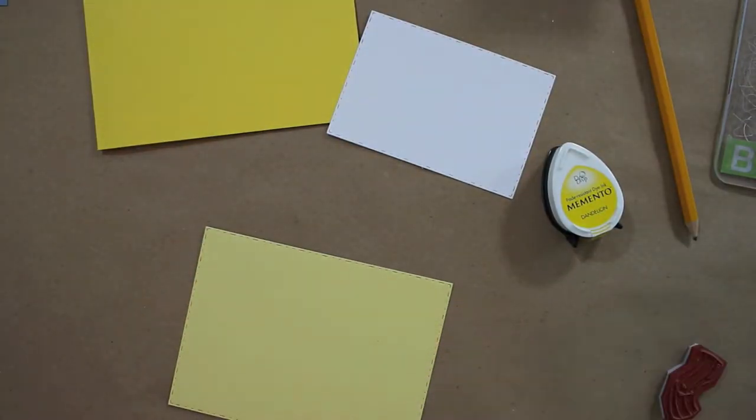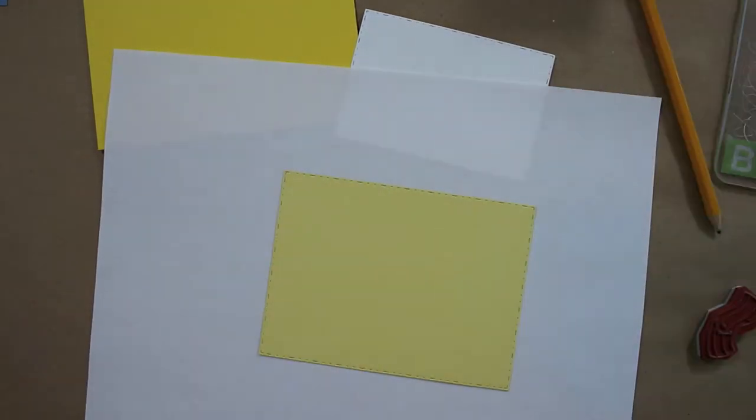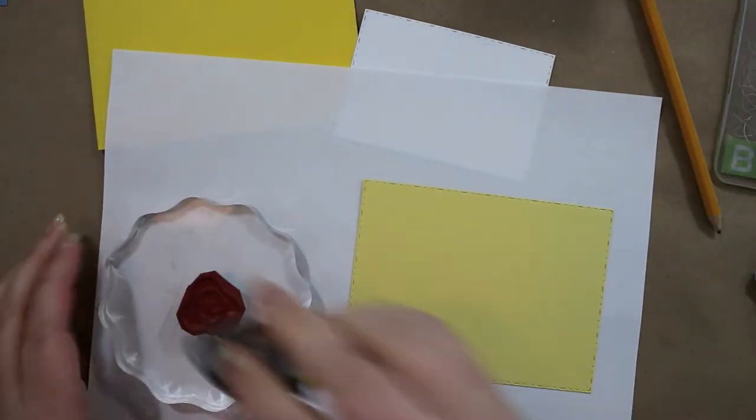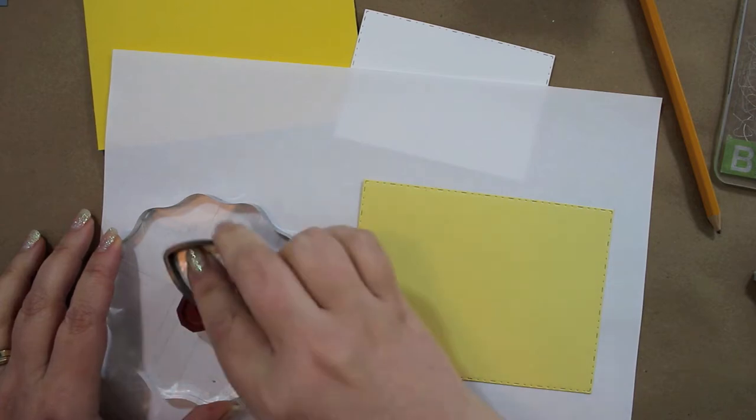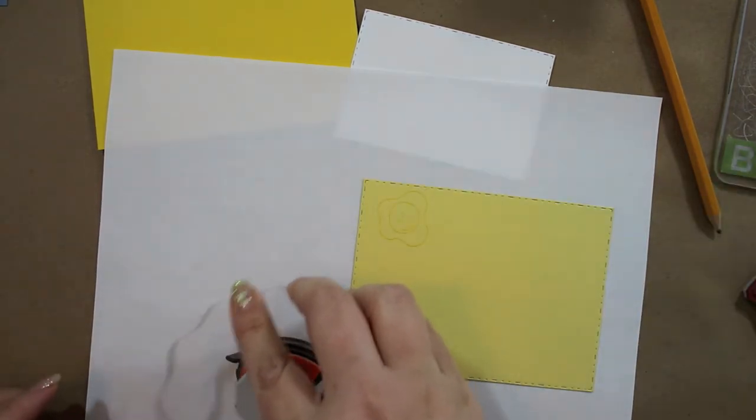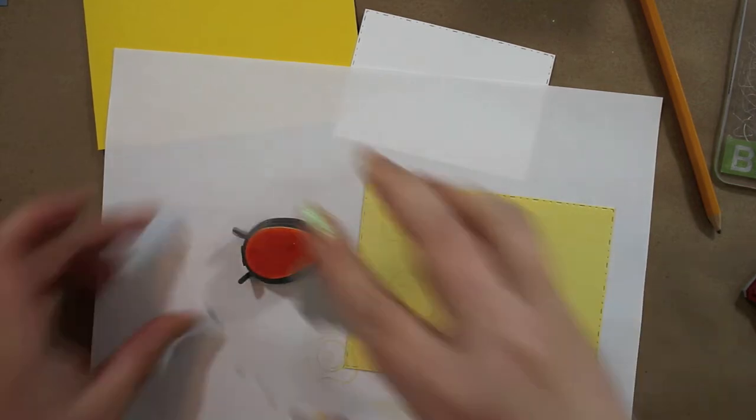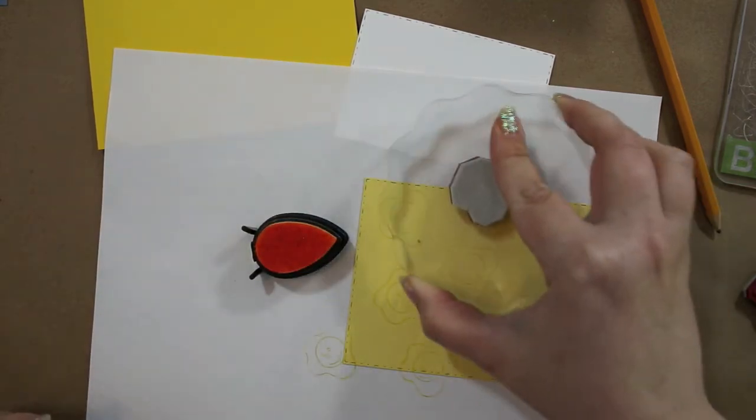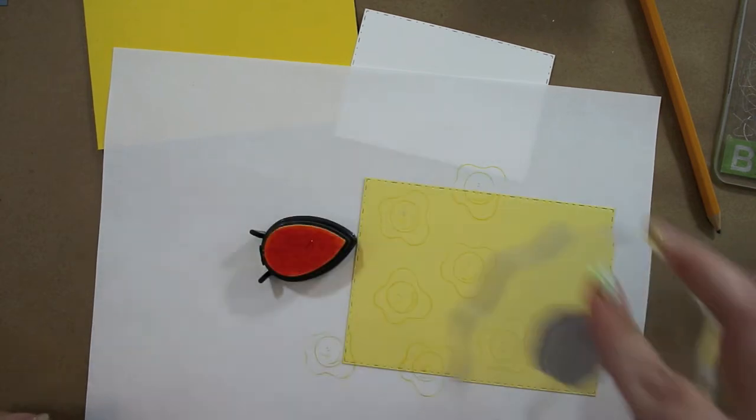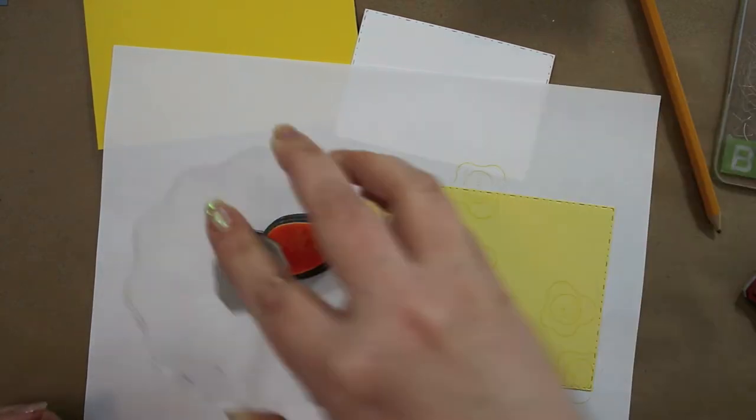I'm using the pierced and stitched rectangle die from By Dynamics for this card. I made my own pattern paper for the middle layer and just took the egg stamp from the set, using dandelion ink from Memento.